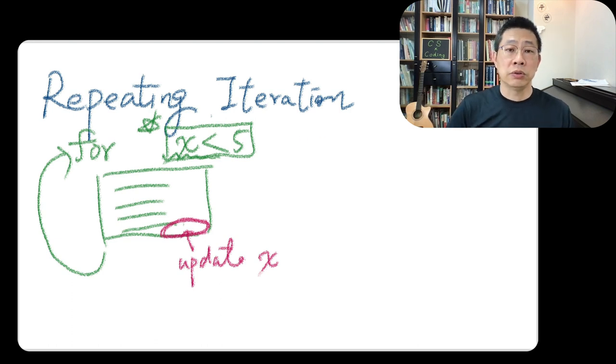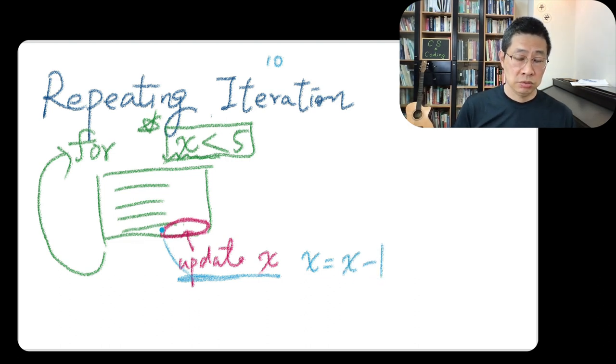Let's give this example. For example, if x initial value is 10, next time the x still 10, this time still 10. So you are kind of repeating forever. So in this case, if you update x, if you do x equals x minus 1 inside the loop, next time x will become 9.